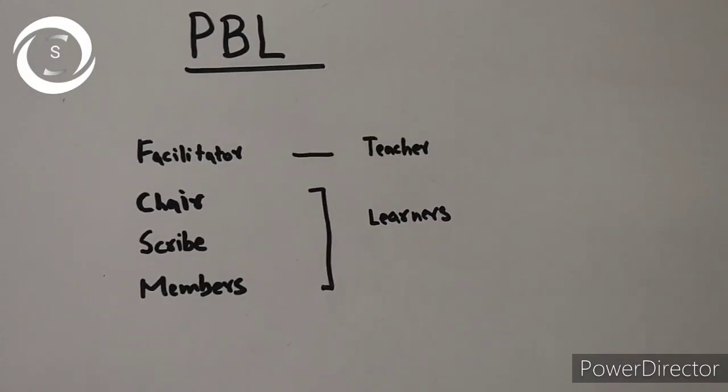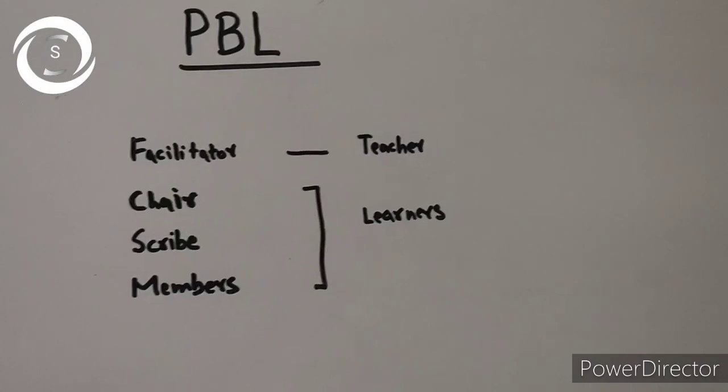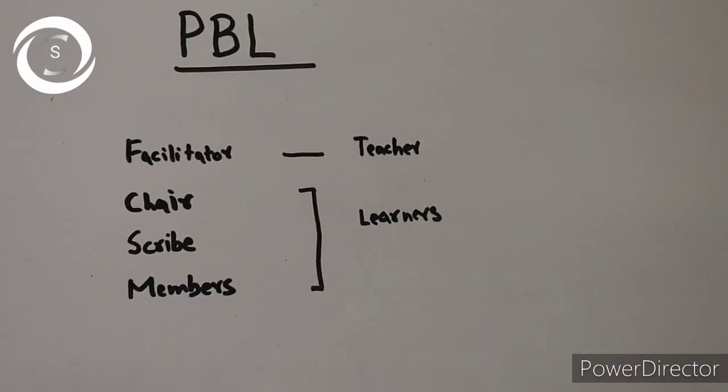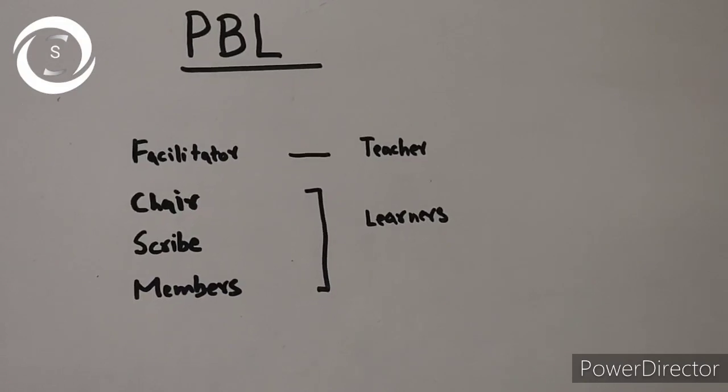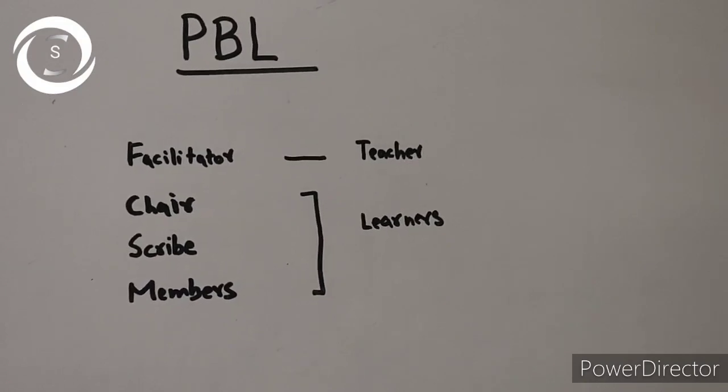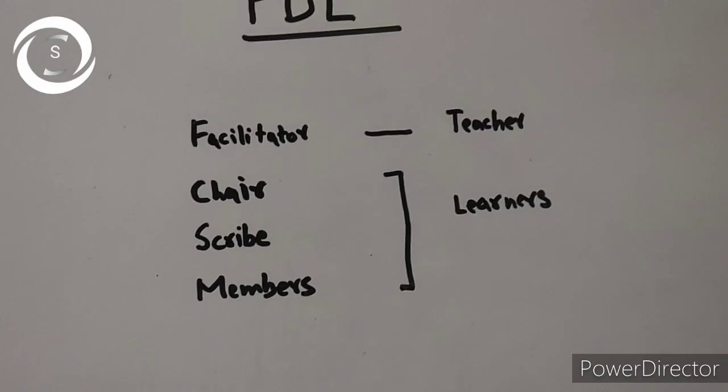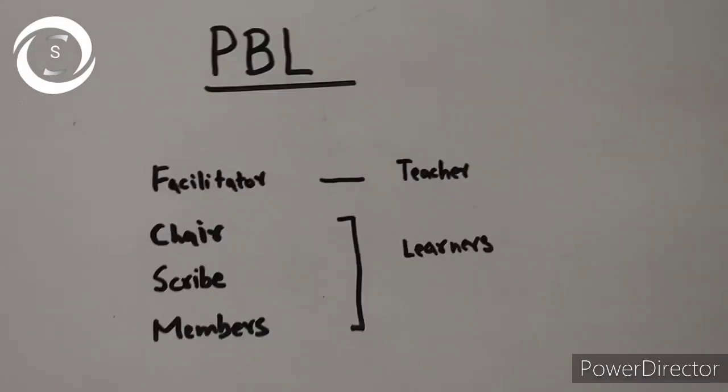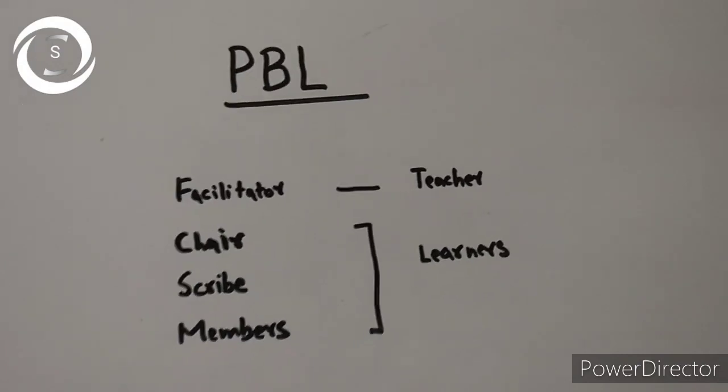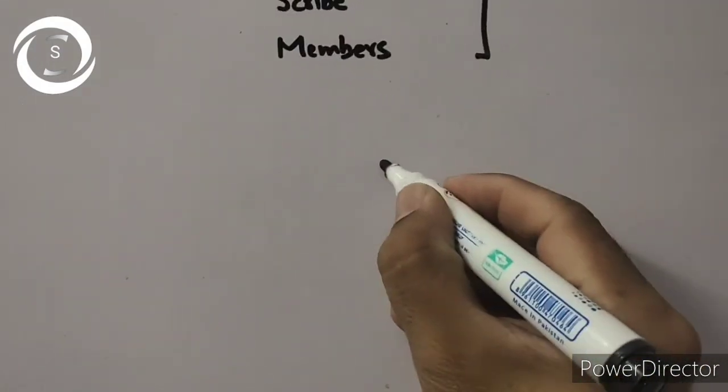Scribe duty is to record points made by members, participate in discussion, record resources used by the group, help group order their thoughts. Chair leads the group, encourages members to participate, keeps to time, maintains group dynamics and keeps check on scribe.